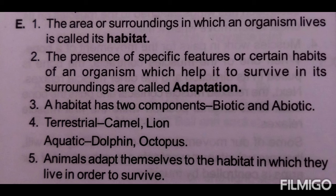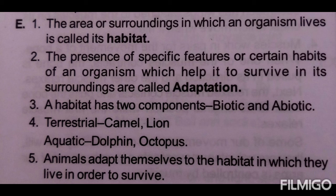Question number three: what are the two main categories of habitats? The habitat has two types — aquatic and terrestrial. Aquatic means those which are in water, and terrestrial means those which are on land. Question four: give two examples of terrestrial and aquatic animals. Terrestrial animals include cat, dog, camel, and lion. Aquatic animals include dolphins, octopus, and fishes.